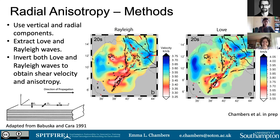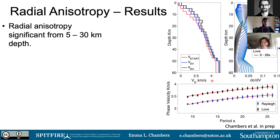Broadly we have similar structures: slower velocities in the Main Ethiopian Rift and beneath the Ethiopian Plateau, and then for the Rayleigh waves a faster zone in the Afar region. However, in the Love waves what's most noticeable is a slower zone in one area and also a fast velocity zone in the Main Ethiopian Rift. Once inverted for shear velocity, we see that the Rayleigh waves are always slower than the Love waves.